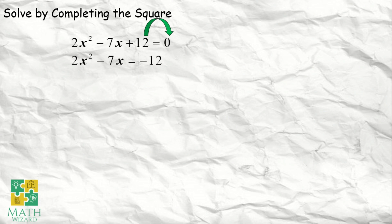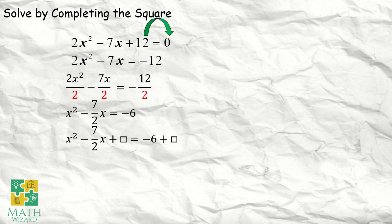Mapapansin mo, yung x squared natin meron na siyang coefficient. So, before we move on to the next step, dapat matanggal muna yung coefficient ng x squared. We need to divide all of them by 2 para x squared na lang matira kay 2x squared. Dividing all of them by positive 2, this becomes x squared minus 7 half x is equal to negative 6, since negative 12 divided by 2 is negative 6. So, x squared na lang, wala ng coefficient ng x.